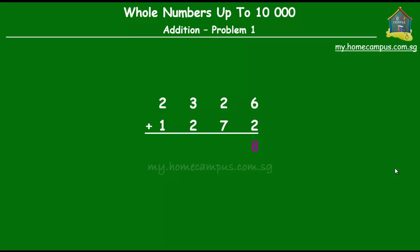We add the ones to the ones. Six ones plus two ones gives us eight ones. Then the tens. Two tens plus seven tens is nine tens. Then the hundreds. Three hundreds plus two hundreds is five hundreds.